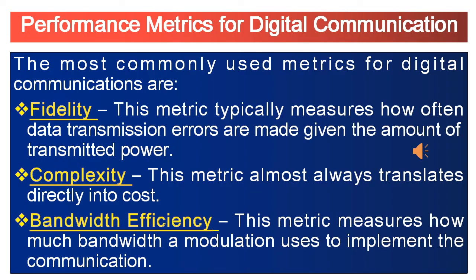If one communication system has a bandwidth efficiency that is twice the bandwidth efficiency of a second system, then the first system can support twice the users on the same bandwidth. Twice the number of users implies twice the revenue.